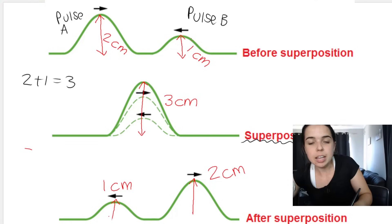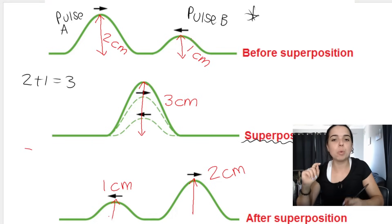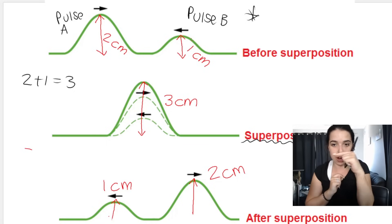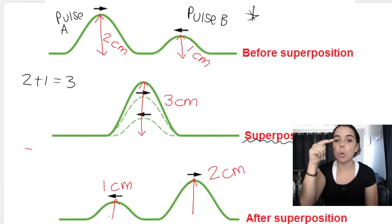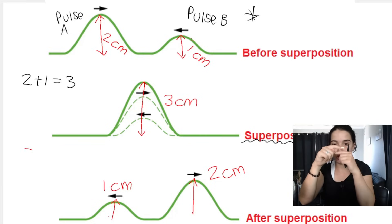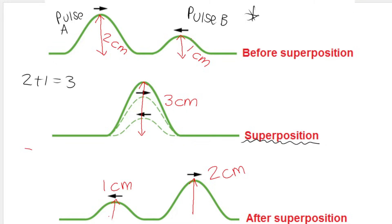Importantly, after superposition, the pulses continue in their original directions of motion. Pulse B was originally going to the left — it continues going to the left. Pulse A was originally going to the right — it continues going to the right. Their original amplitudes remain intact after they've passed each other.